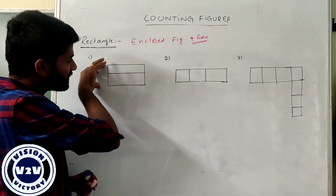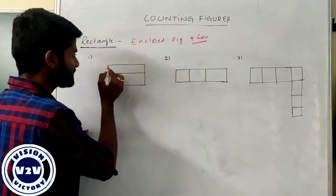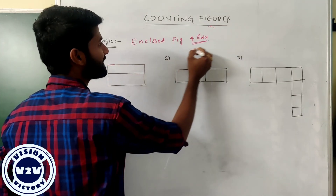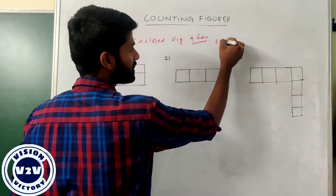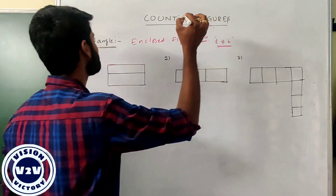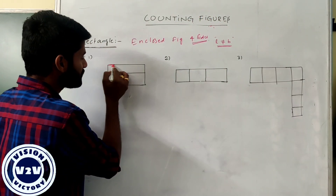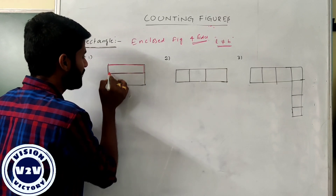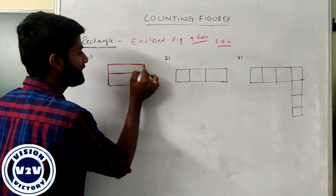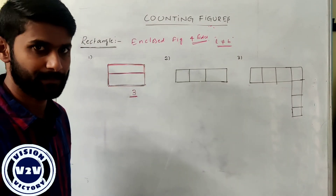This is the figure given — count how many rectangles we have. Remember that for a rectangle, L is not equal to B. We have one rectangle, and this is the other rectangle, and the entire figure is also a rectangle. The total number of rectangles in this figure is three.